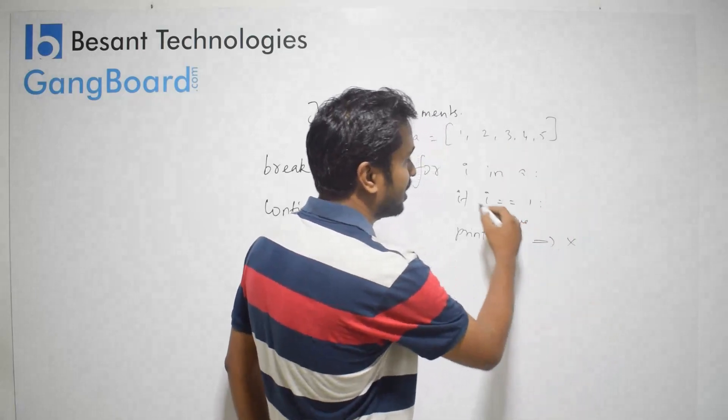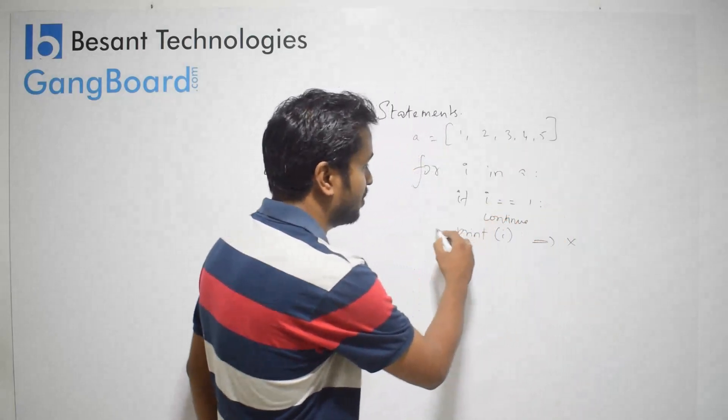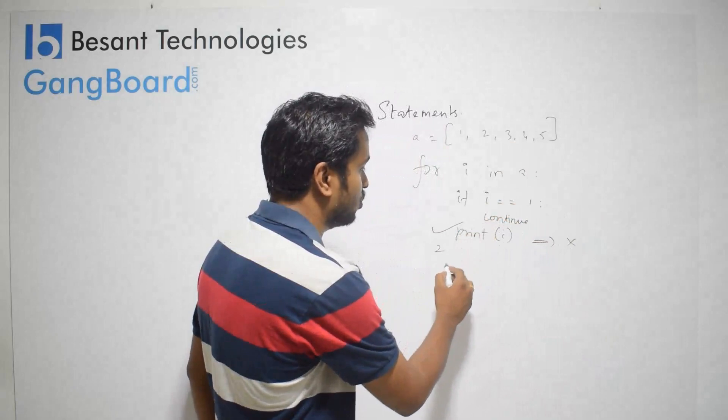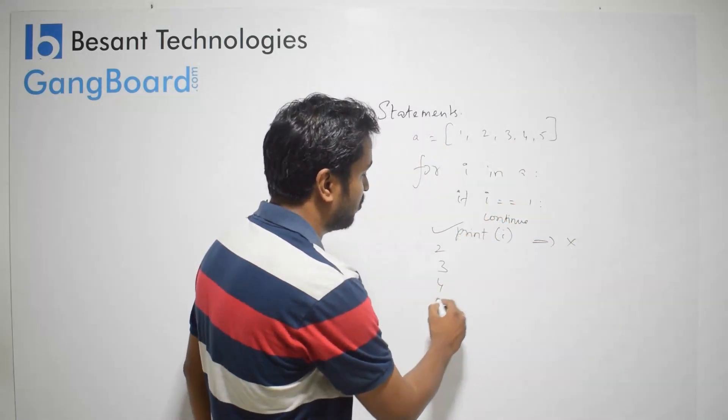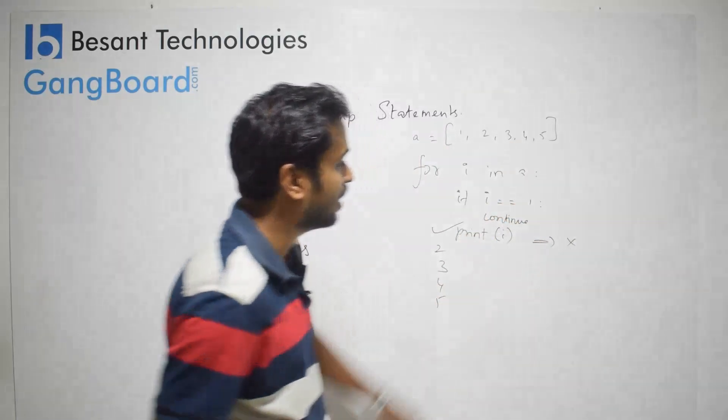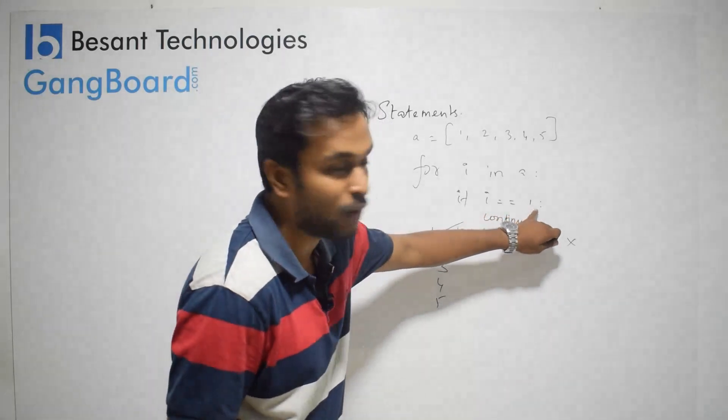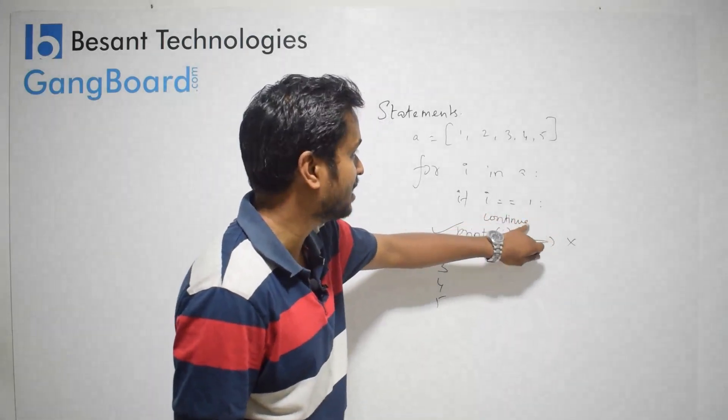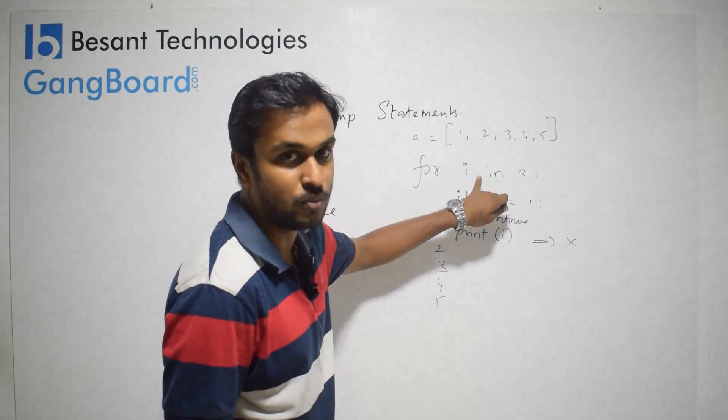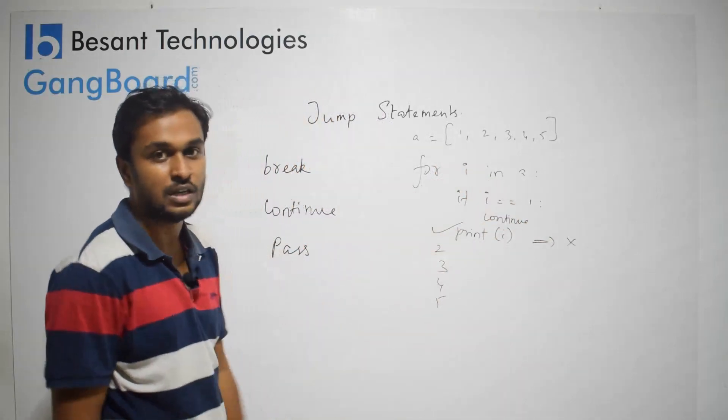Second iteration, 2 doesn't match the condition, so it prints 2. Then 3 prints, 4 prints. But when i equals 1 and the condition matches, it goes back to the start of the loop without executing remaining statements.